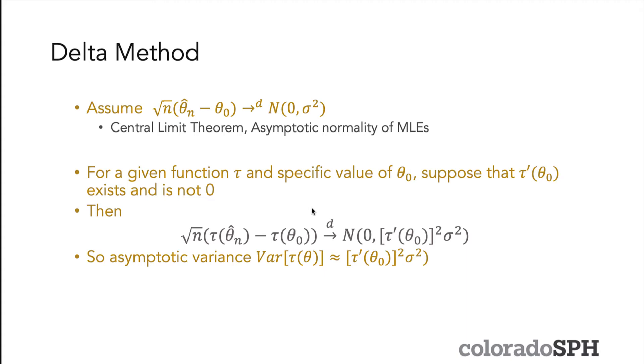For a given function τ and a specific value θ₀, meaning the true value of θ, suppose that the first derivative of τ(θ₀) exists and is not equal to zero. The delta method states then that the transformation of the MLE, τ(θ̂), also has an asymptotically normal distribution with variance given by the derivative of τ(θ) squared times σ², the variance of the original estimator before the transformation.